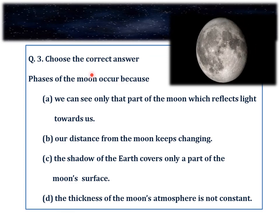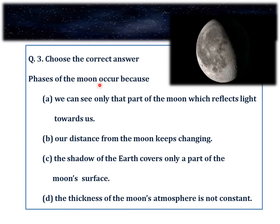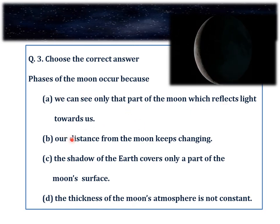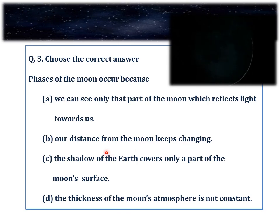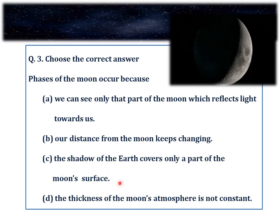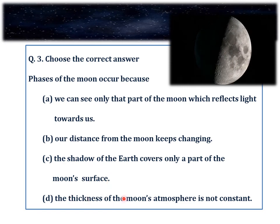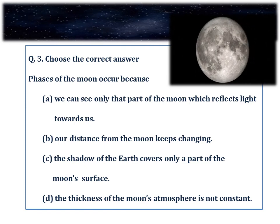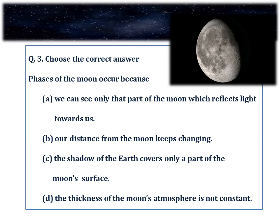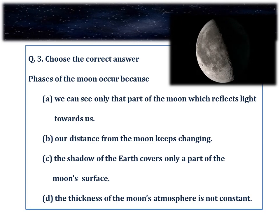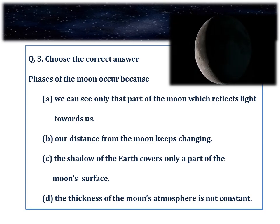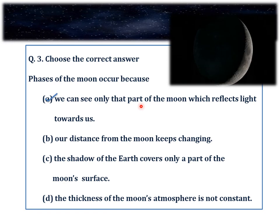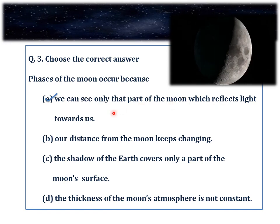Question number 3. Choose the correct answer. The phases of the moon occur because: A. We can only see that part of the moon which reflects light towards us. B. Our distance from the moon keeps changing. C. The shadow of the earth covers only a part of the moon's surface. D. The thickness of the moon's atmosphere is not constant. The moon is a non-luminous object and does not produce its own light. We can see the moon only because it reflects the light which falls on it from the sun. Hence the answer is A.